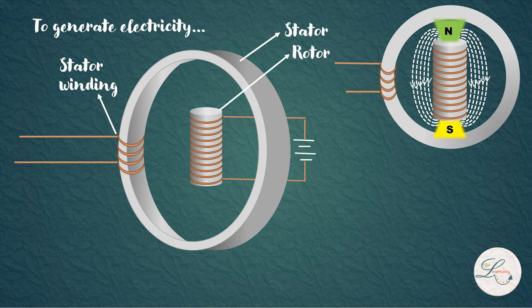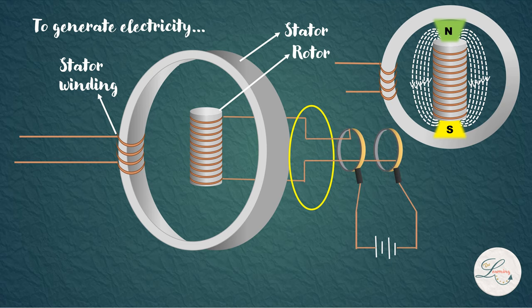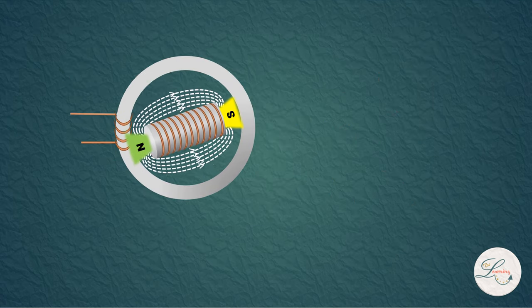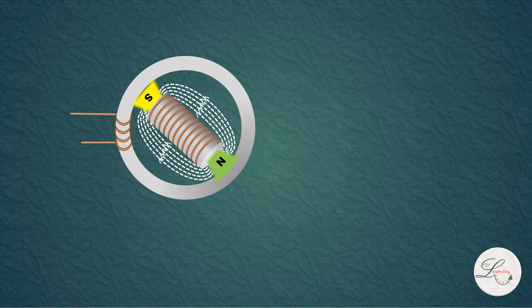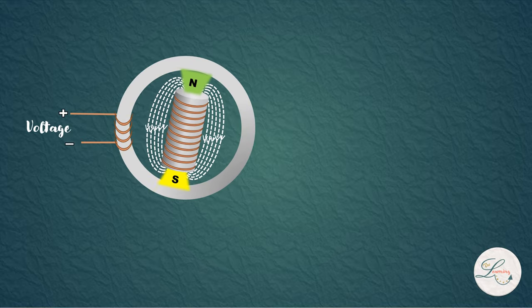Since the DC supply is connected to the electromagnet, while rotating the electromagnet, the DC supply is also rotated. So to avoid this, we can use slip rings and brushes. As the electromagnet rotates, the magnetic field crosses the conductor and the voltage is induced.